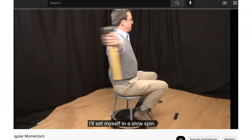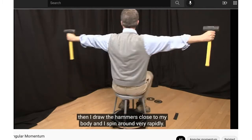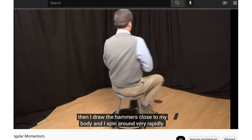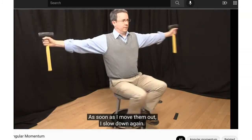Watch this man who's sitting on a stool and spinning on the stool with two hammers in his hands. Watch how he can control his angular velocity simply by pulling the hammers in and stretching it out.